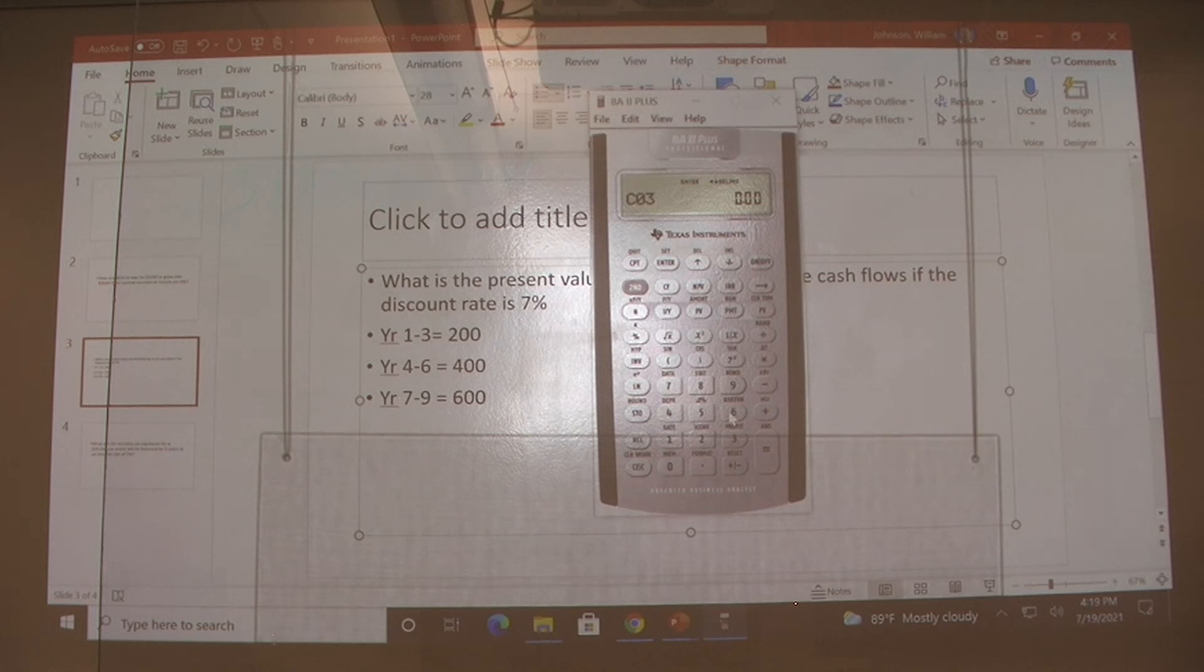And our third cash flow, $600. And how many times do we get paid that? Also three times. Enter.